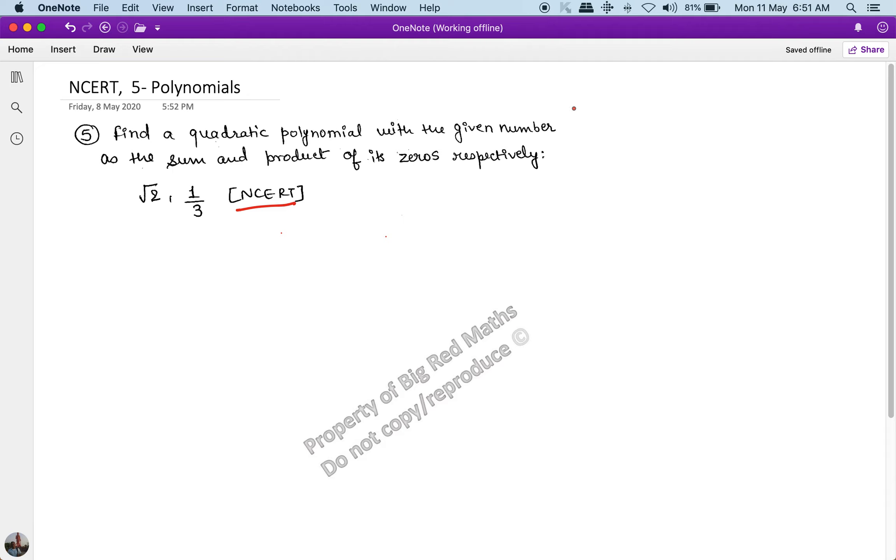a quadratic polynomial with the given numbers as the sum and product of its roots respectively. Now, we know that the standard definition of a quadratic polynomial is f(x) = k times (x² minus sum of roots